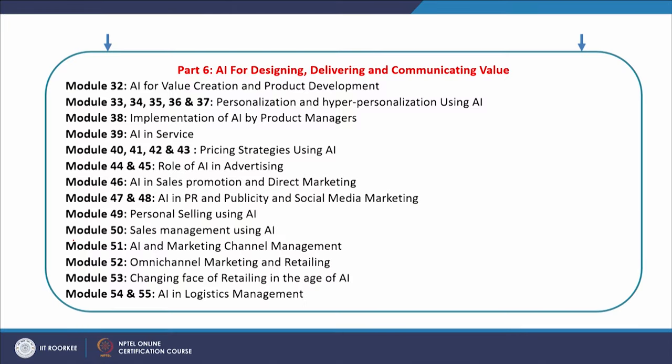In Part 5, we will talk about building strong brands using artificial intelligence, and modules 26 to 31 are covered in Part 5. In Part 6, we will talk about AI for designing, delivering, and communicating value, and modules 32 to 55 are dedicated to this. In Part 7, that is ethics in AI, we will talk about the ethical concerns in using AI, and modules 56 to 60 are covered in this part.